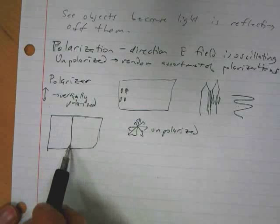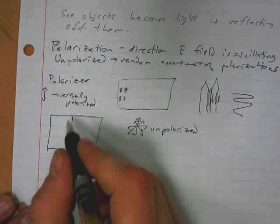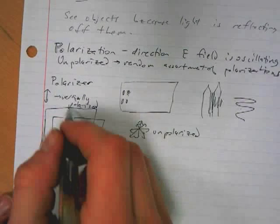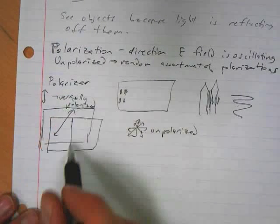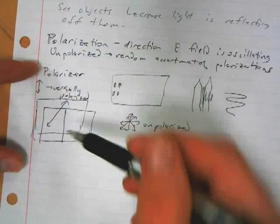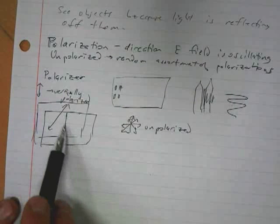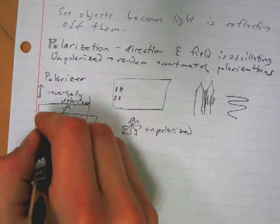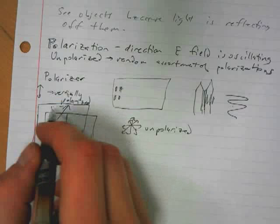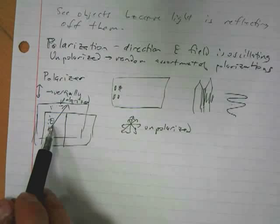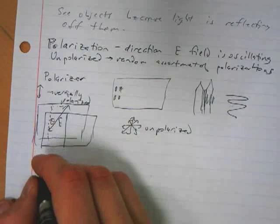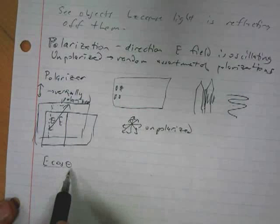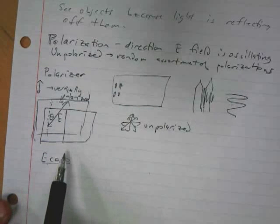So here we have a vertical polarizer, and say we've got a beam of light coming in polarized at some angle to the polarizer. If this is our E field and we break it up into a horizontal and vertical piece, and we consider the angle theta between the E field and the polarizer, then the vertical component is E cosine theta. That is the magnitude of the E field in the direction of polarization of the polarizer.